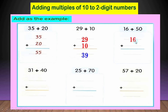another question: 16 plus 50. ادي الـ 16 وادي الـ 50. الـ ones مع الـ ones والـ tens مع الـ tens. 6 plus 0 equal 6. 1 plus 5 equal 6. يبقى الانسر 66. سهلة جدا!